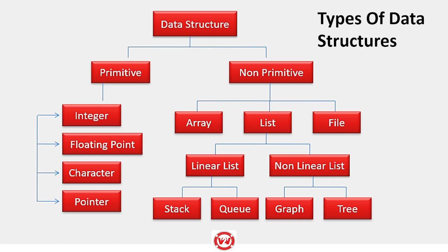Primitive data types are those which are by default available under any programming language. I hope you have studied at least C and C++ as one of your programming languages. In C, integer requires two bytes and floating point requires four bytes — there is a predefined memory required for each of these data types. That is what is primitive. Non-primitive are the ones we create for our own use, such as arrays, lists, files, etc.